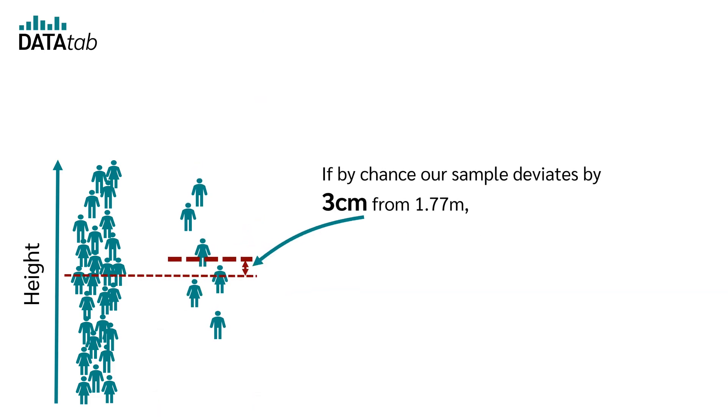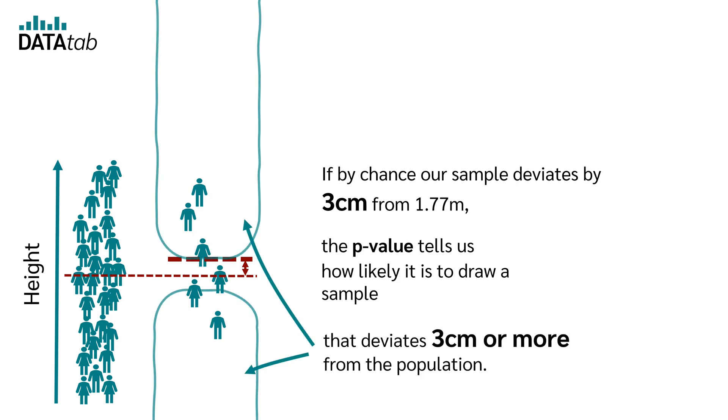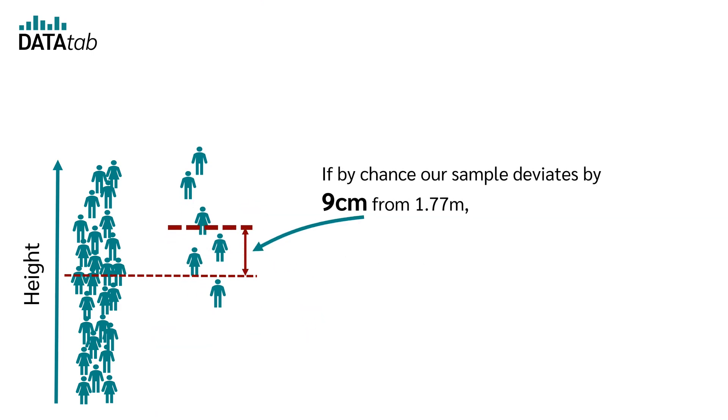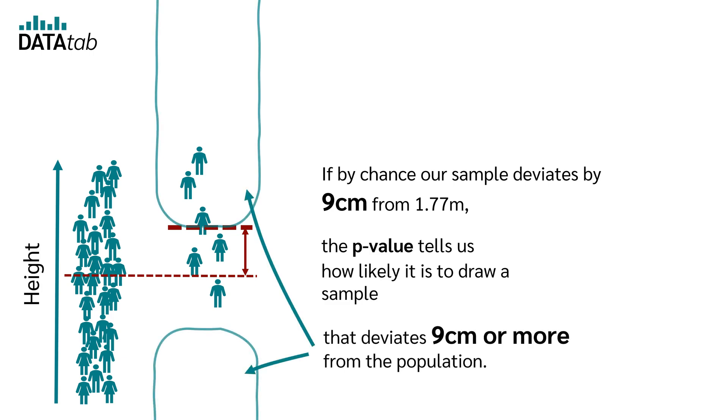If by chance our sample deviates by 3 centimeters from 1.77, the p-value tells us how likely it is to draw a sample that deviates 3 centimeters or more from the population. If by chance our sample deviates by 9 centimeters from 1.77, the p-value tells us how likely it is to draw a sample that deviates 9 centimeters or more from the population.